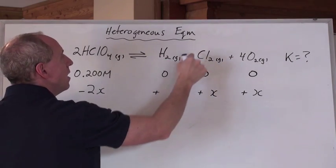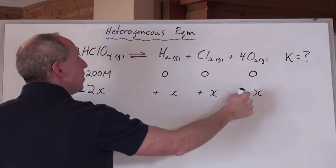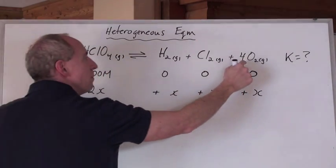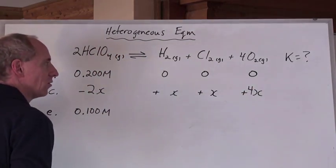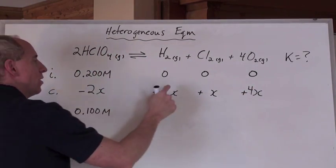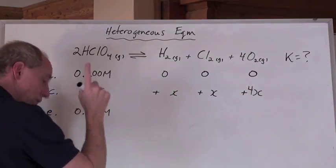That's going to be plus x. But every time you lose two here, you're going to make how much here? Four there. So you put a four in front of that x. And so, every time this loses two x, you're going to get x here, x here, four x here, which means this.